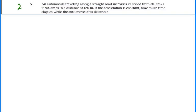Take a look at problem 2.5. An automobile traveling along a straight road increases its speed from 30 meters per second to 50 meters per second in a distance of 180 meters. If the acceleration is constant, how much time elapses while the auto moves this distance?